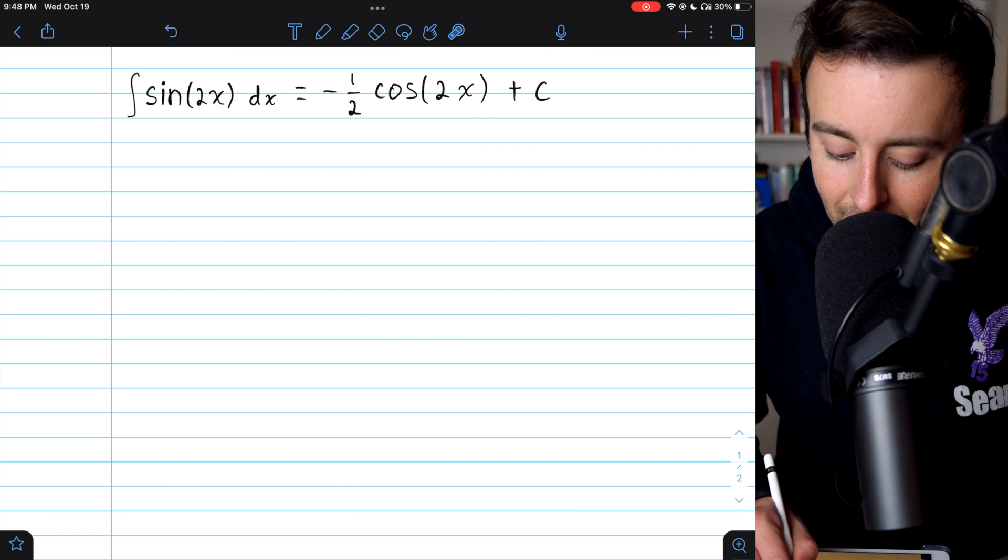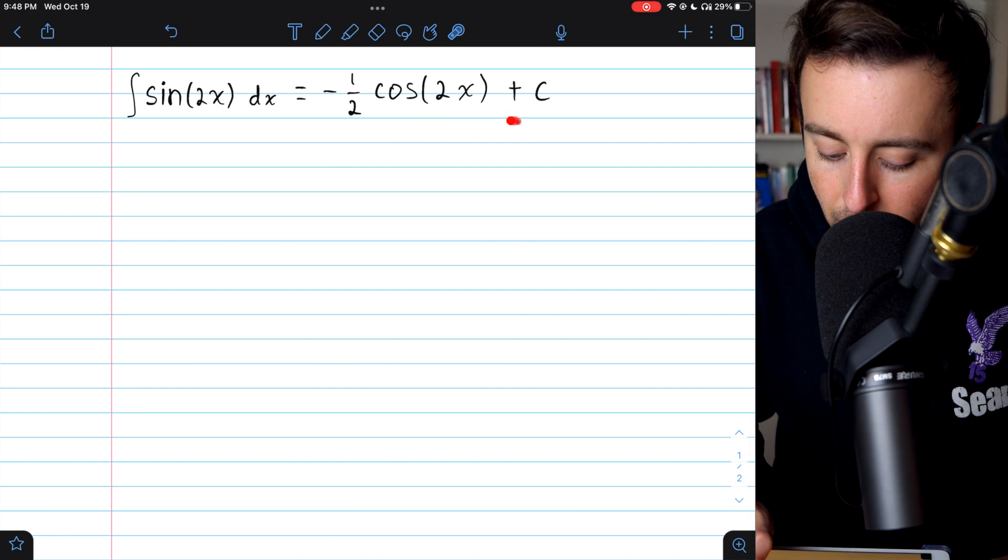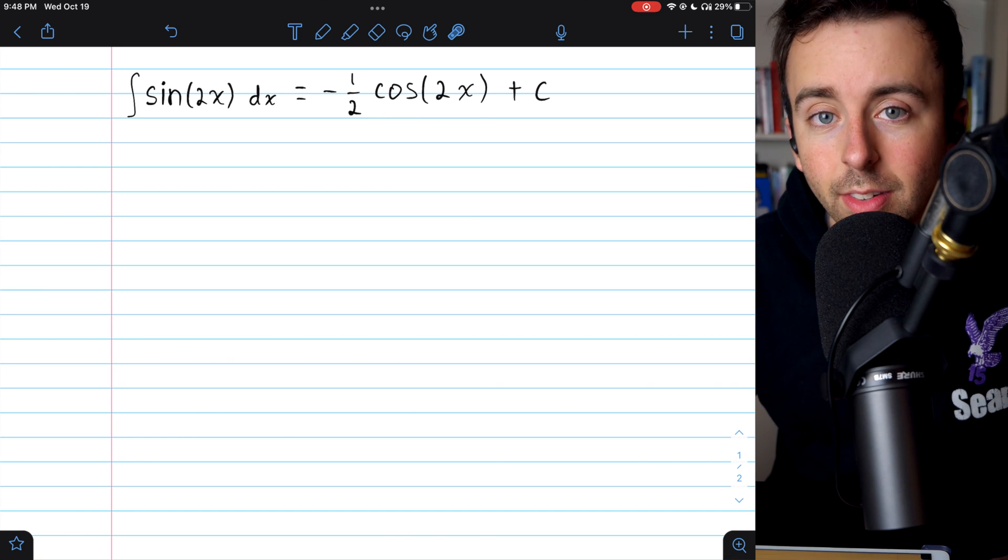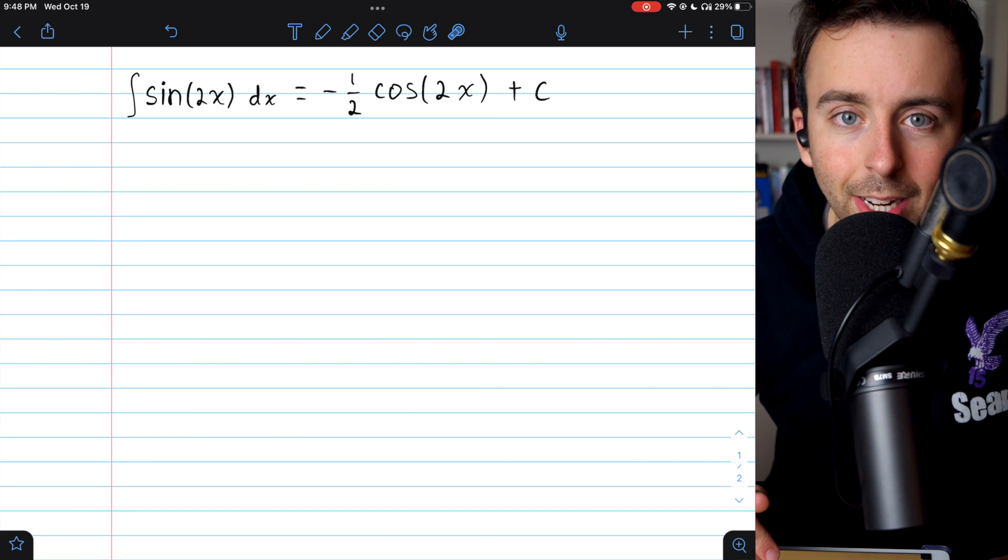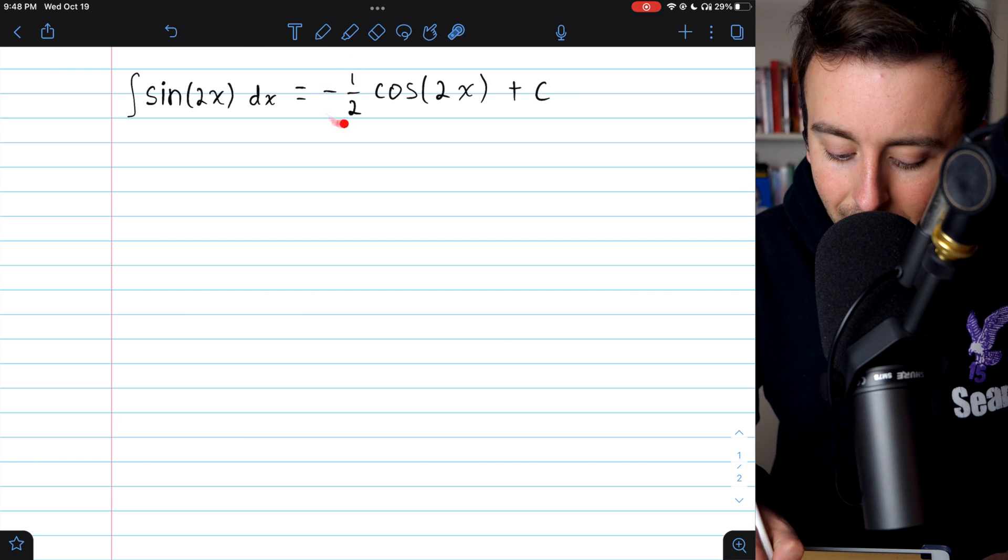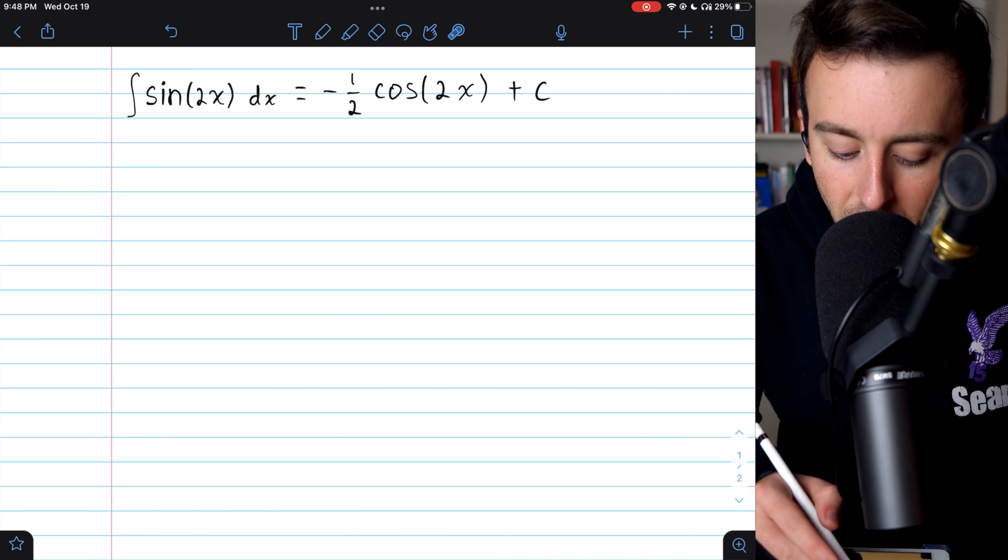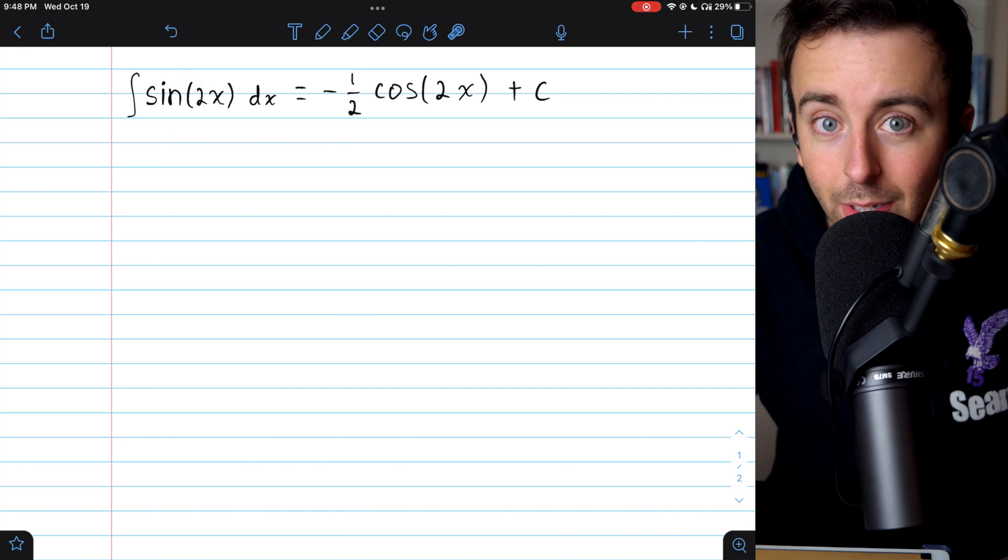Then we just want to quickly think about the derivative of this to check our work. If we took the derivative, cosine of 2x would give us negative sine of 2x multiplied by 2 because of the chain rule. That negative and that 2 would be canceled out by our negative half. The constant would become 0, and we would just be left with sine of 2x as we desire.